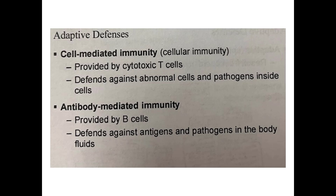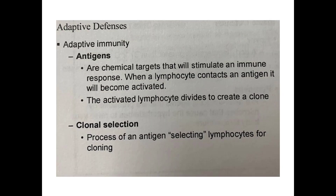Cell-mediated immunity or cellular immunity is provided by cytotoxic T cells, defending against abnormal cells and pathogens inside cells. Antibody-mediated immunity is provided by B cells, defending against antigens and pathogens in body fluids. Antigens are chemical targets that stimulate an immune response — when a lymphocyte contacts an antigen, it activates and divides to create a clone. Clonal selection is the process of an antigen selecting lymphocytes for cloning that will best combat it.